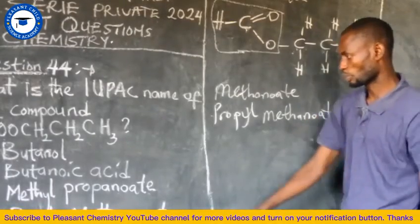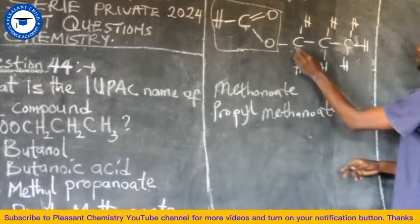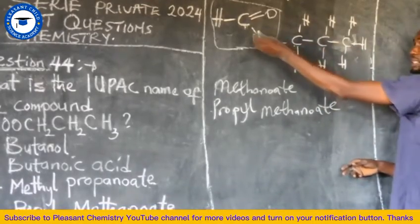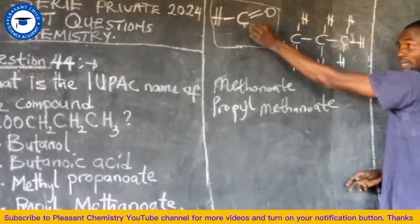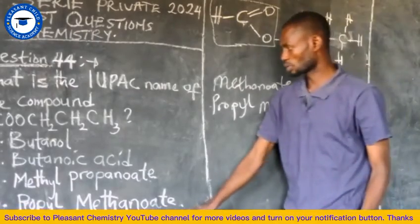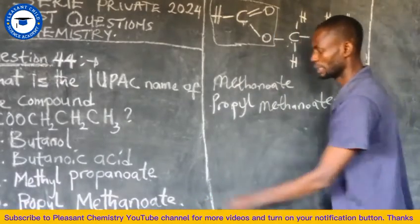So, the correct option here is propyl methanoate. This is propyl because of three carbons, the family name is methanoate. So the correct option here is propyl methanoate, the answer.